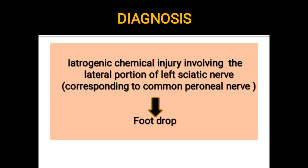The diagnosis is iatrogenic chemical injury involving the lateral portion of the left sciatic nerve, corresponding to the common peroneal nerve component. That is the reason the patient developed foot drop following intramuscular injection. This is why intramuscular injections should always be given in the upper outer quadrant of the gluteal region, as the sciatic nerve lies in the lower inner quadrant. This case highlights how precisely high-resolution ultrasound can delineate the minute morphological changes of peripheral nerves, thereby aiding in arriving at an accurate diagnosis.